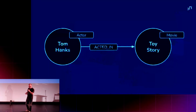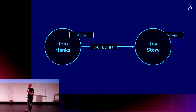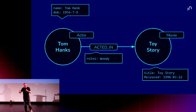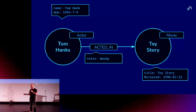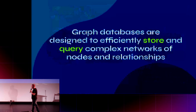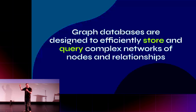Graphs allow us to understand the relationships between data, between entities. So Tom Hanks is an actor; he acted in the movie Toy Story. Graph databases allow us to store data in this graph format, and using this graph structure they're great for highly connected data.